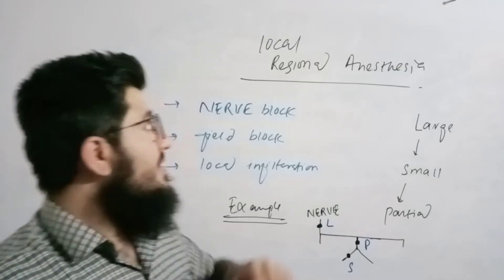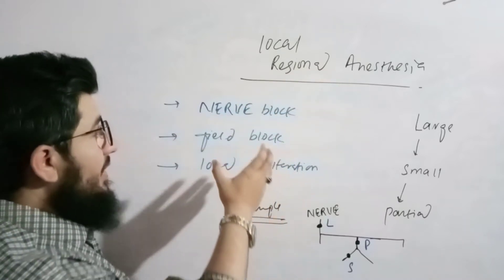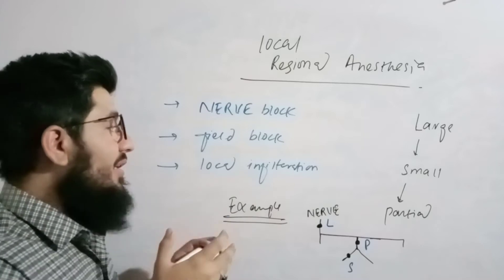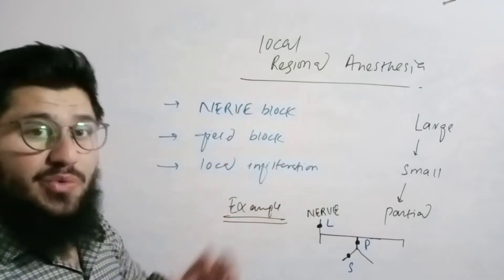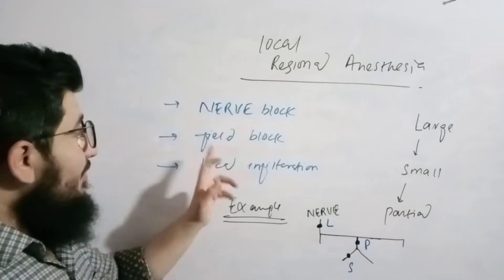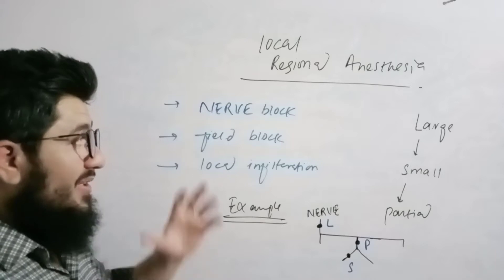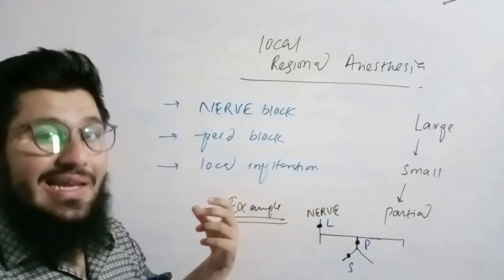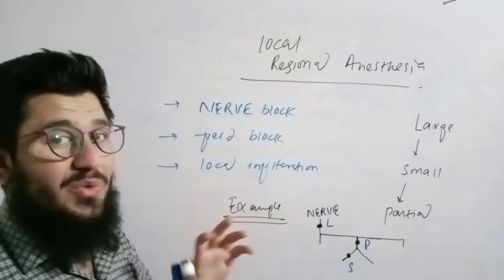The topic under discussion today is local or regional anesthesia. In this topic we will talk about nerve block, field block, and local infiltration. If you want to know more about anesthesia in general, we already have a lecture about that. We'll explain these terms in short, brief, and simple words, then come towards an example to make people understand in a very simple way.